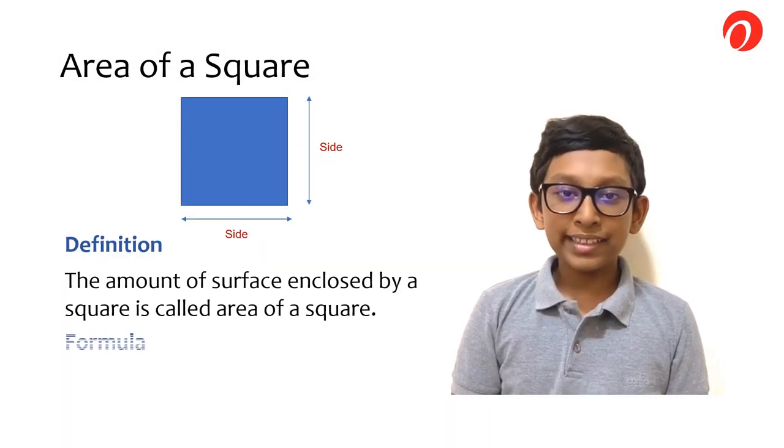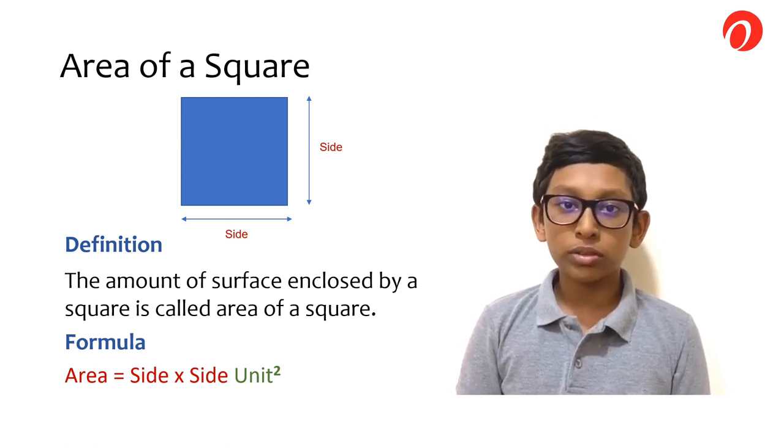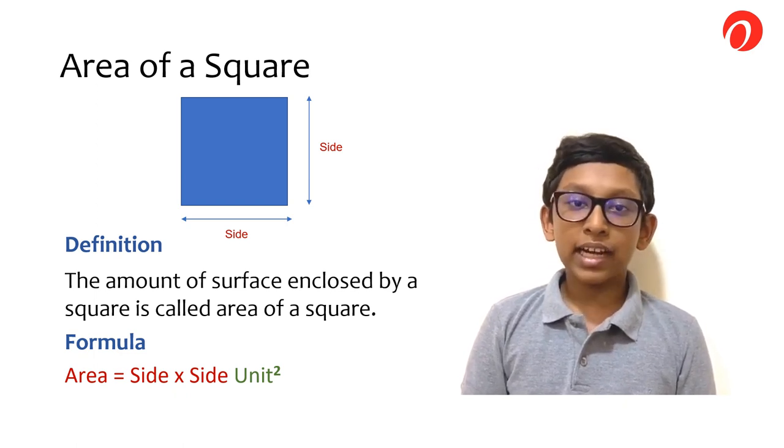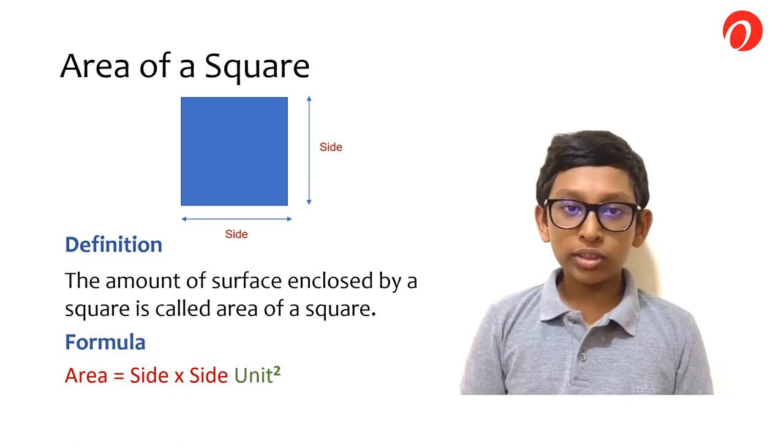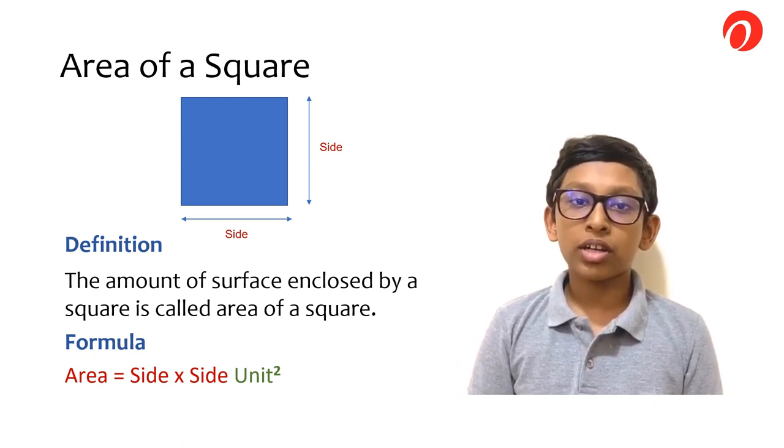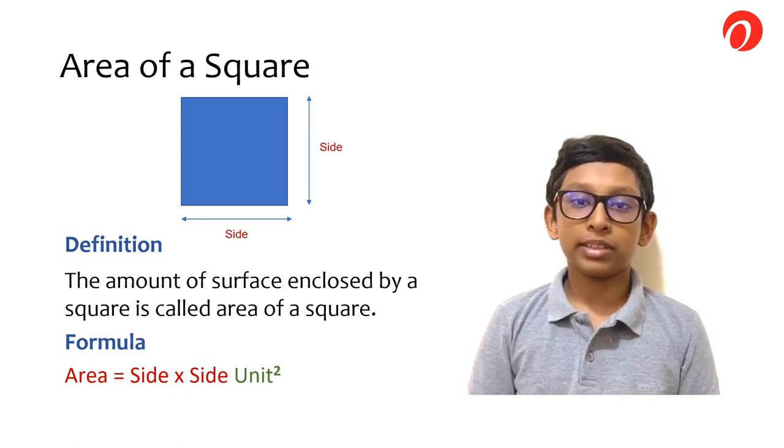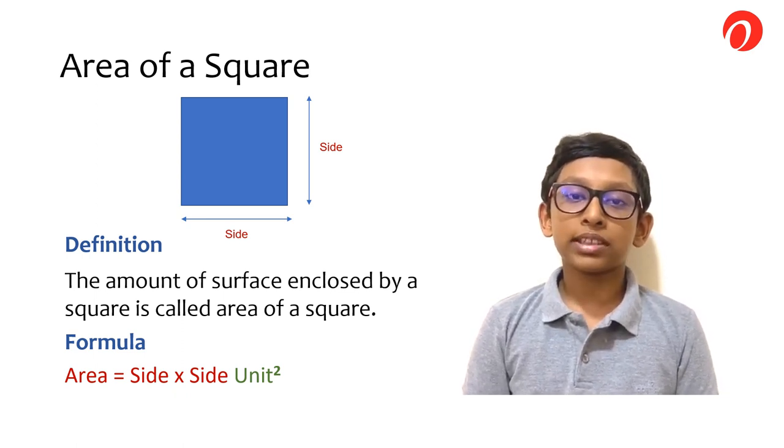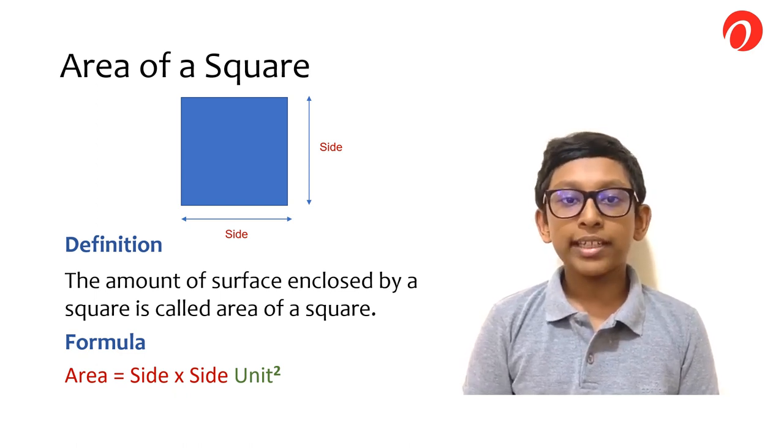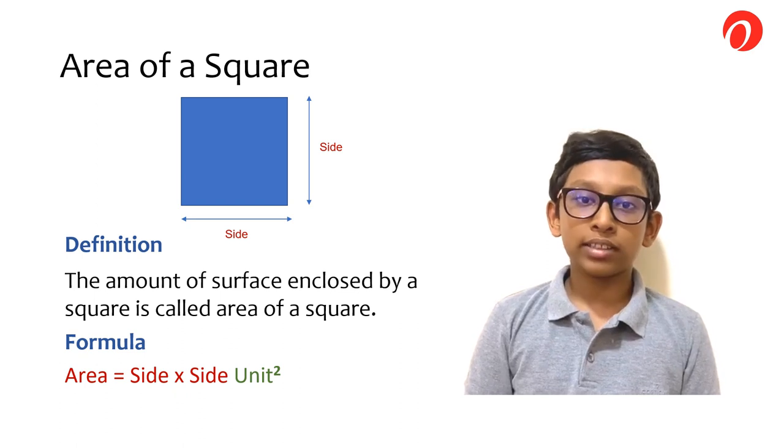The area of a square can be defined as the amount of surface enclosed by a square. The formula for that is side times side and a unit squared. For example, let's say I have a square that is 3 cm by 3 cm. Side times side will be written as 3 cm by 3 cm in this scenario, and the answer will be 9 cm².